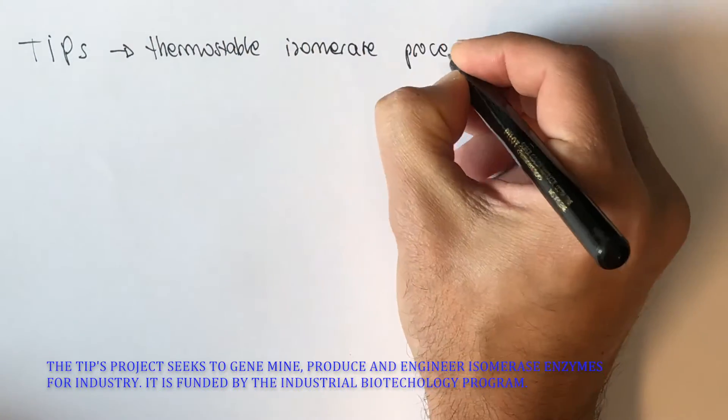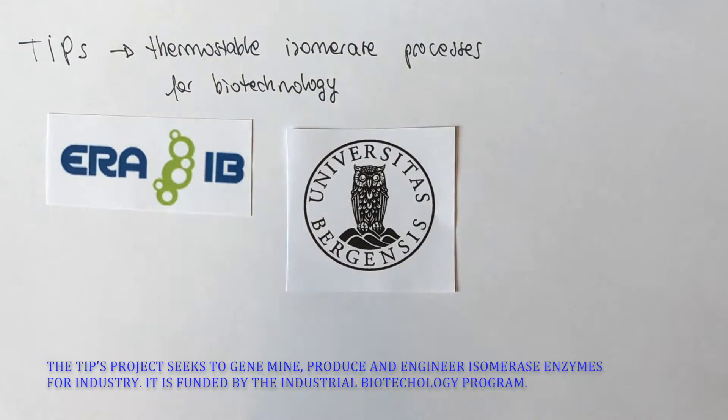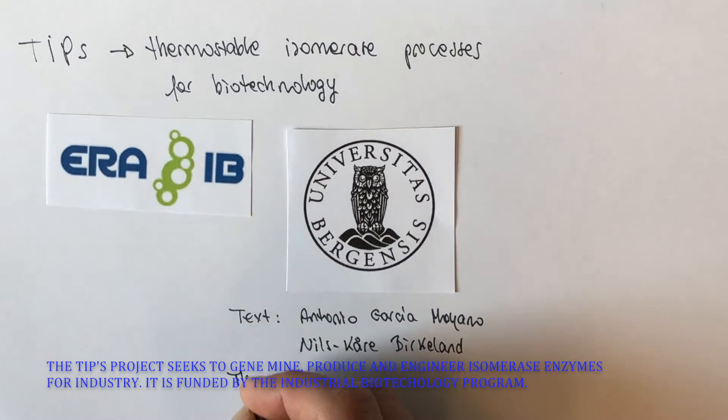The TIPS project aims to search, produce, characterize, and engineer potential isomerase enzymes for industrial biotechnology applications. It is funded by the ERA-IB industrial biotechnology program.